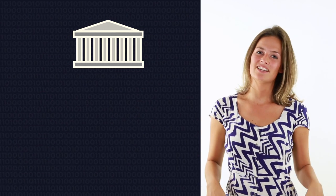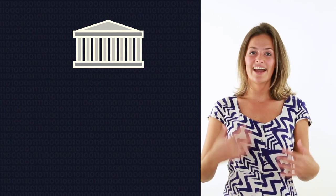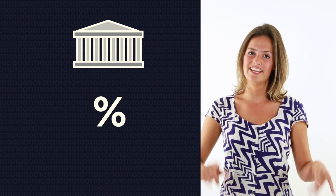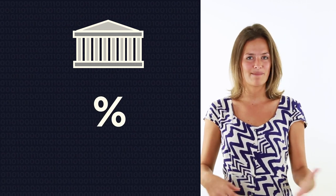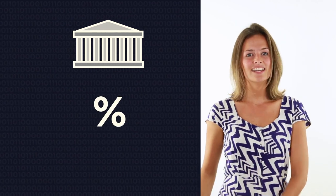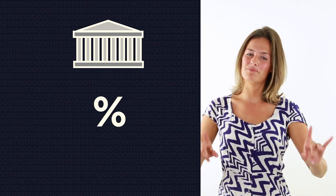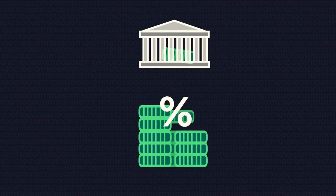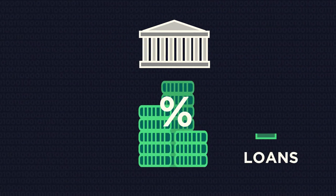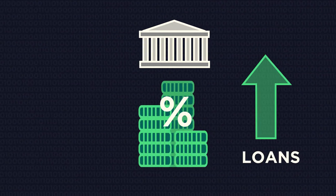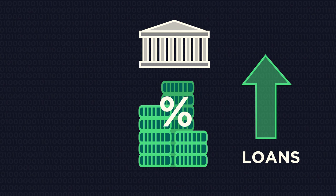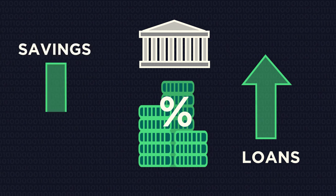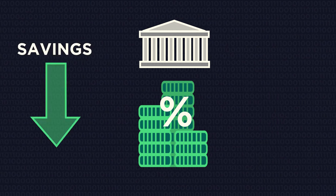The amount you are paid, or the extra amount you have to pay back, depends on the interest rate set by the bank. This is one way that banks make money. The interest rate they charge on loans is higher than the interest they pay for the money you save.